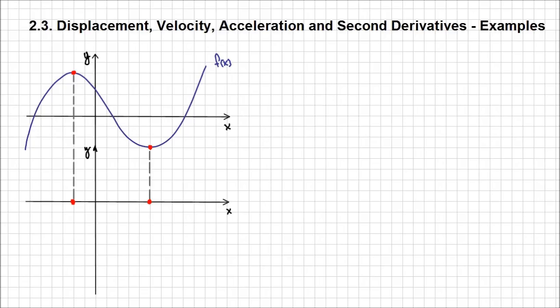So we've already determined where the graph of the derivative of f of x intersects the x-axis. Since we started with a cubic function, and differentiating a polynomial decreases the degree by one, we expect the first derivative to be a quadratic function — its graph is going to be a parabola. Since we know this parabola intersects the x-axis at two points, which we've already identified, all we need to determine is whether this parabola opens up or down.